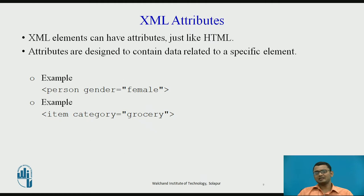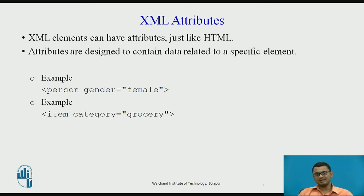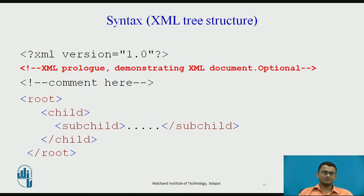Attributes are designed to contain data related to a specific element. For example, for an element 'person', the attribute could be 'gender', specified in the opening tag as gender equals 'female' in double quotes. Another example: for a grocery mall XML document, the element is 'item' and the attribute is 'category' holding the value 'grocery'. The value of an attribute is always given in double quotes.